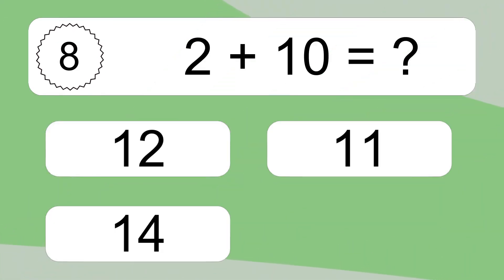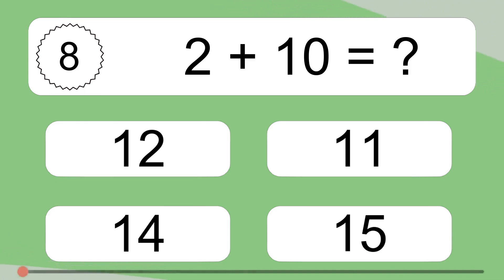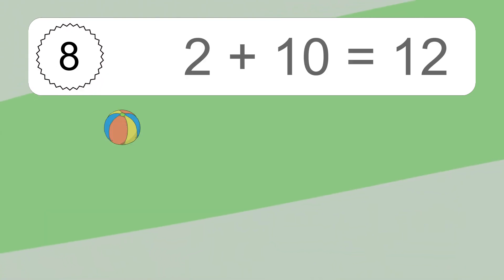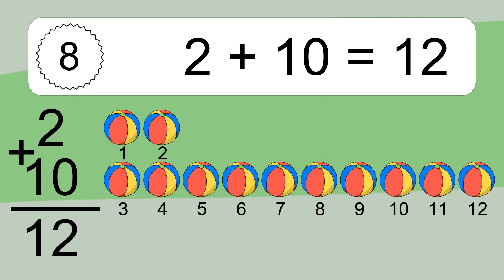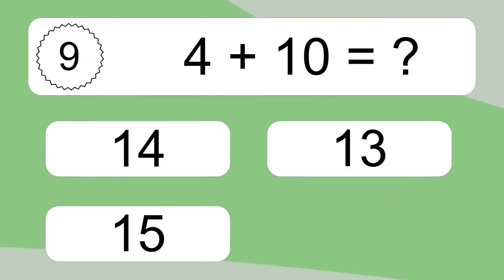2 plus 10 equals what? 2 plus 10 equals 12. Let's count it: 1, 2, 3, 4, 5, 6, 7, 8, 9, 10, 11, 12.